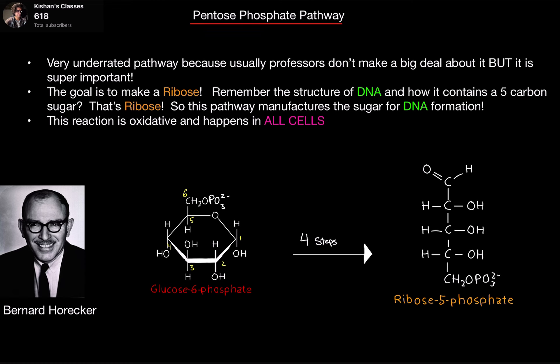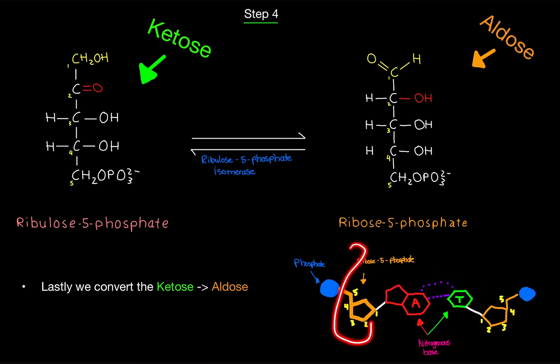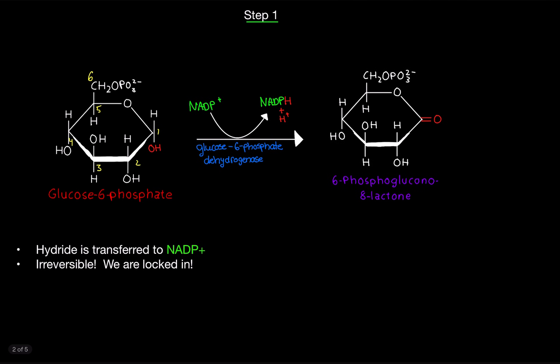The goal of this pathway is to make ribose. Now you're probably wondering, why do we need to make ribose? What is the purpose? It's super important — one of the most important pathways in your body — because it is used to make DNA. All cells need to have ribose.